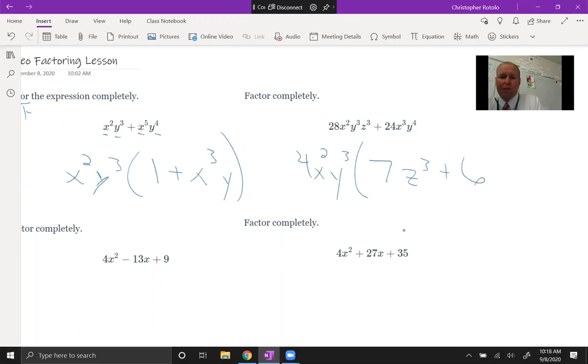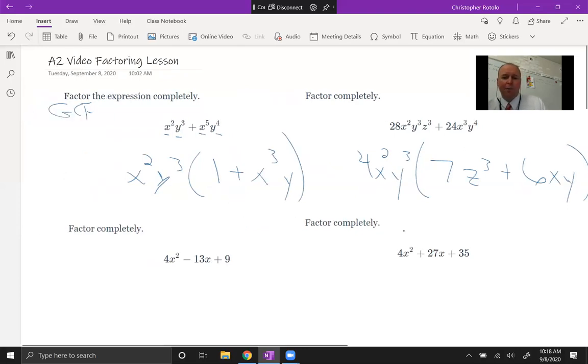but you do keep a z cubed, plus this is going to be six, x cubed, x squared, so I got x to the first power of just one, and we're going to keep a y on there as well. So that's just your greatest common factor type of problem.